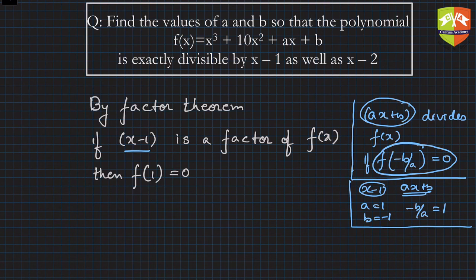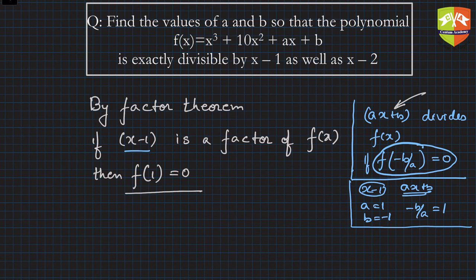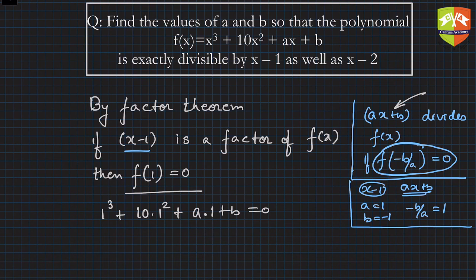Since x minus 1 is a factor, we check f of 1 equals 0. Substituting x equals 1 into f(x): 1 cube plus 10 times 1 squared plus a times 1 plus b equals 0. Simplifying, 1 plus 10 gives 11, so we get a plus b plus 11 equals 0. This is equation number 1.